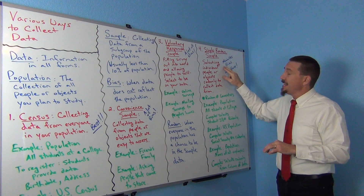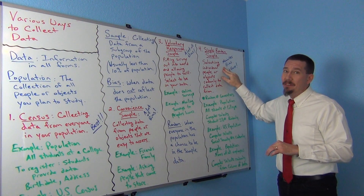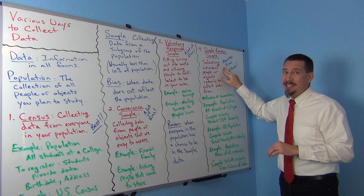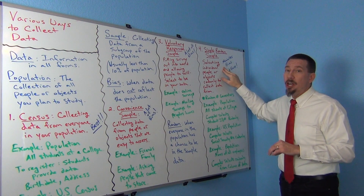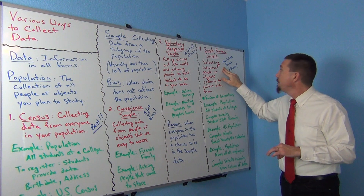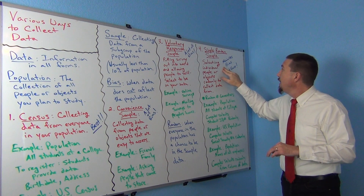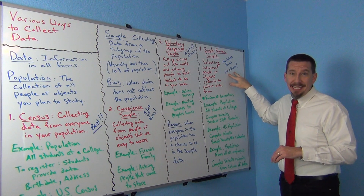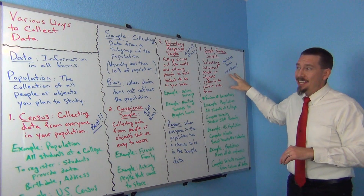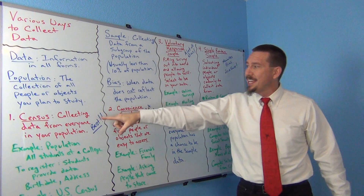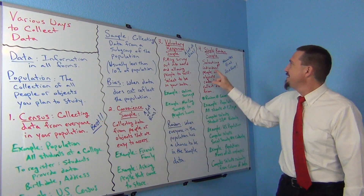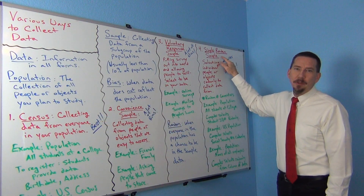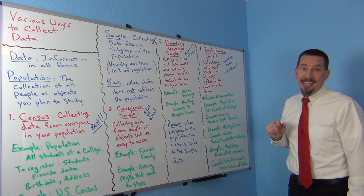Simple random samples tend to not have very much bias in them, if they really are a true simple random sample from the population. I think of this as the second best option — if you can't do a census, a simple random sample would be your second best.